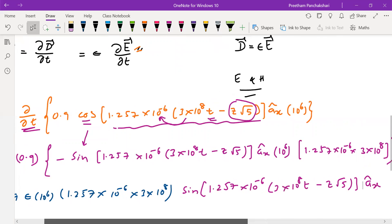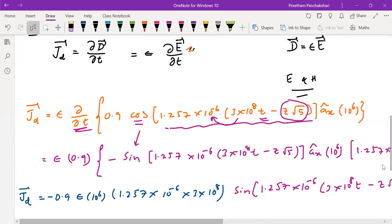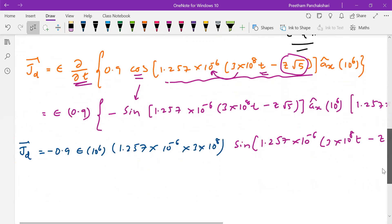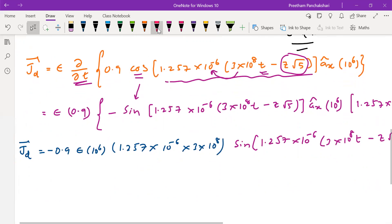But in this problem it is required to find only the amplitude of Jd. If complete Jd was required, this is the answer we have to simplify and keep. Since only amplitude is required, you can write that. So the amplitude of Jd is simply the magnitude of the value associated with the sin term.